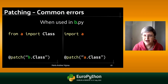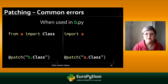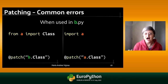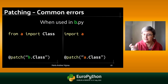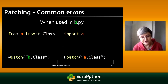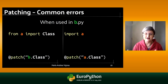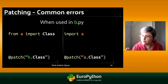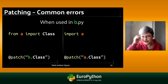When we use b.py, in one case on the left, I have 'from a import class'. You need to know that in the namespace of module b.py, you have the name 'class', and then you need to patch 'b.class' because you have to patch that namespace. On the right, you have 'import a'. In this case, you need to patch 'a.class' because you are patching the namespace of the a module — that is where the a.class object is being used.